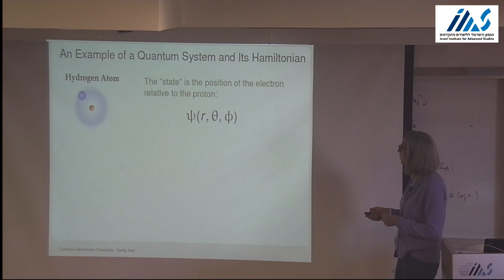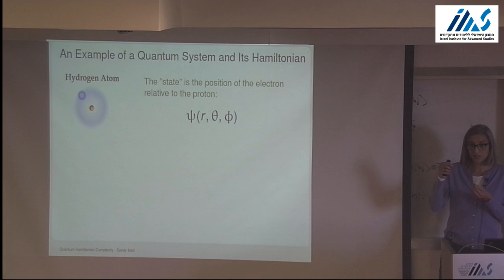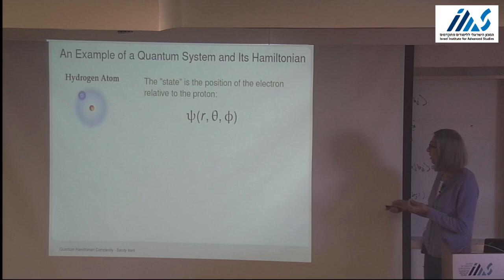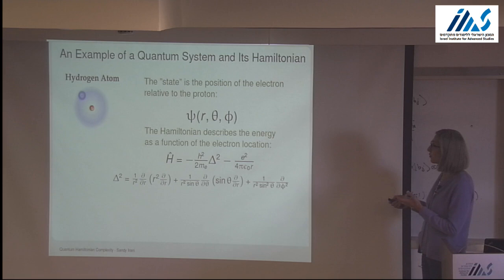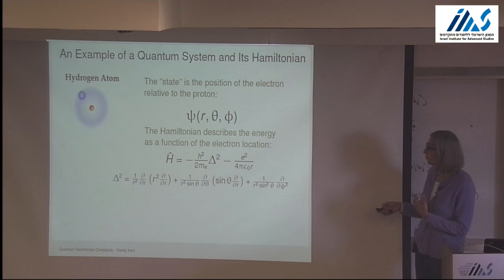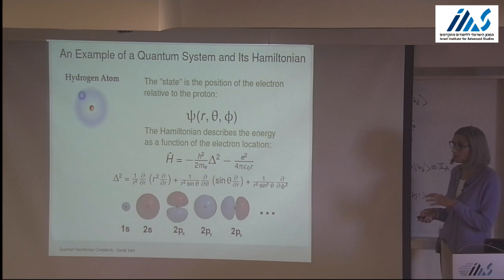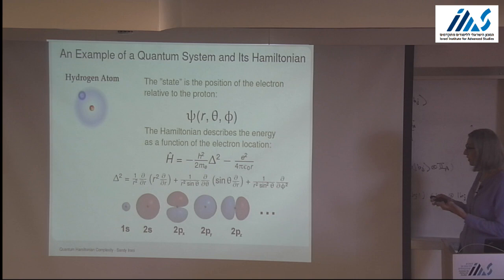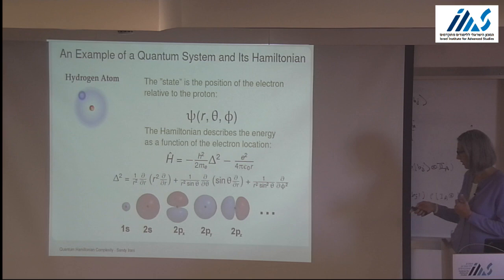Here's an example of a quantum system — a hydrogen atom. The quantum state is the position of the electron relative to the nucleus expressed in polar coordinates. The Hamiltonian describes the energy as a function of the electron location, with terms for potential energy and kinetic energy expressed in polar coordinates. Here are the eigenstates of this Hamiltonian. This is a nice example of a system that appears completely continuous but exhibits quantized discrete behavior in its eigenstates.